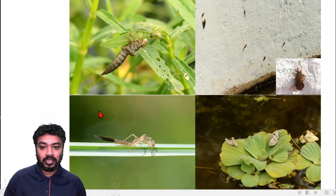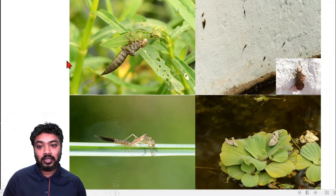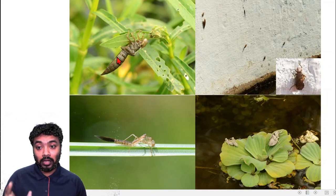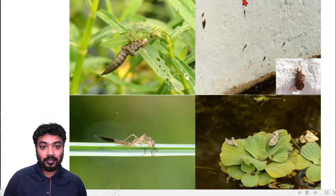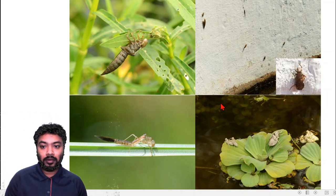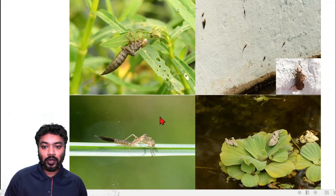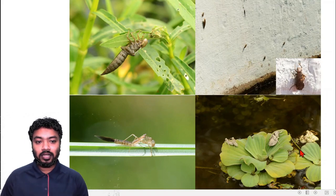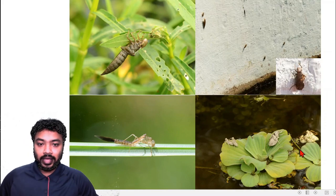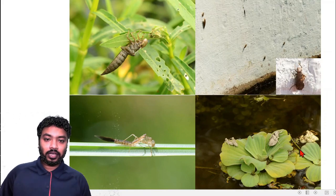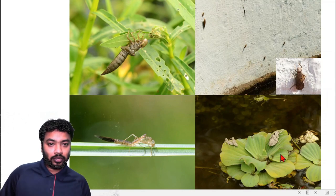The damselfly exuvia looks like this, and the dragonfly exuvia like that. I have seen them sometimes crawling up walls as well — they can often come out from a wall. So now you can understand where to look for dragonfly and damselfly exuvia.